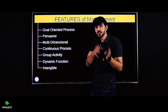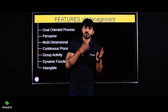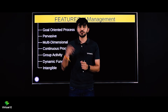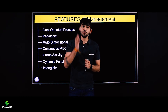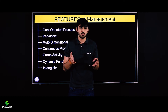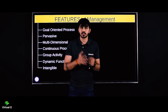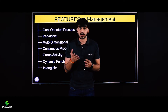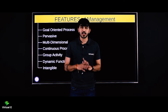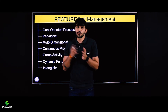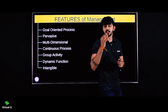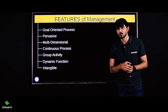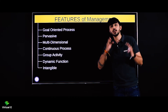Fourth feature: management is a continuous process. Management ki definition mein humne kya pada ki management is a series of planning, organizing, staffing, directing and controlling. Do you ever stop planning in your life? We always plan for something. Let's say board exams ke baad Goa ka plan karna hai, ya papa ko car ke liye manana hai — so how will you convince papa, wo plan karna hai. If planning is a continuous, never ending process, then management is also a never ending process.